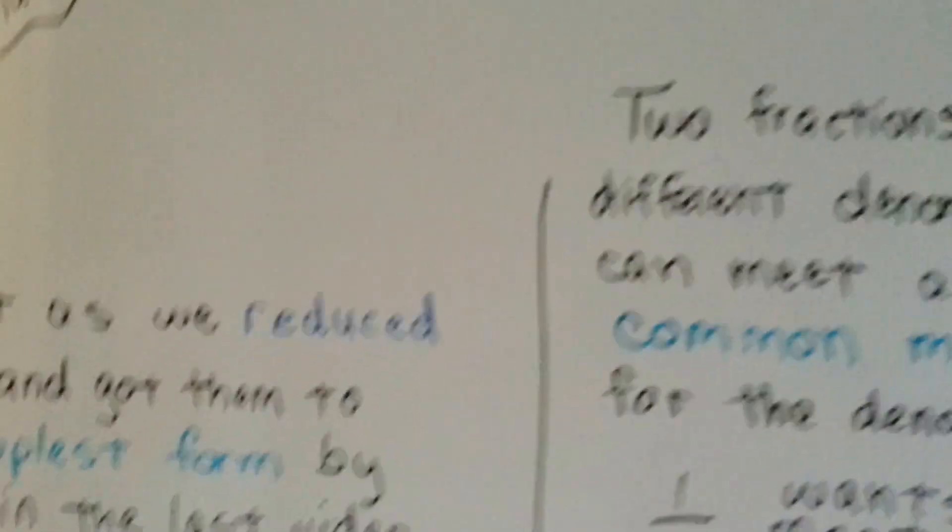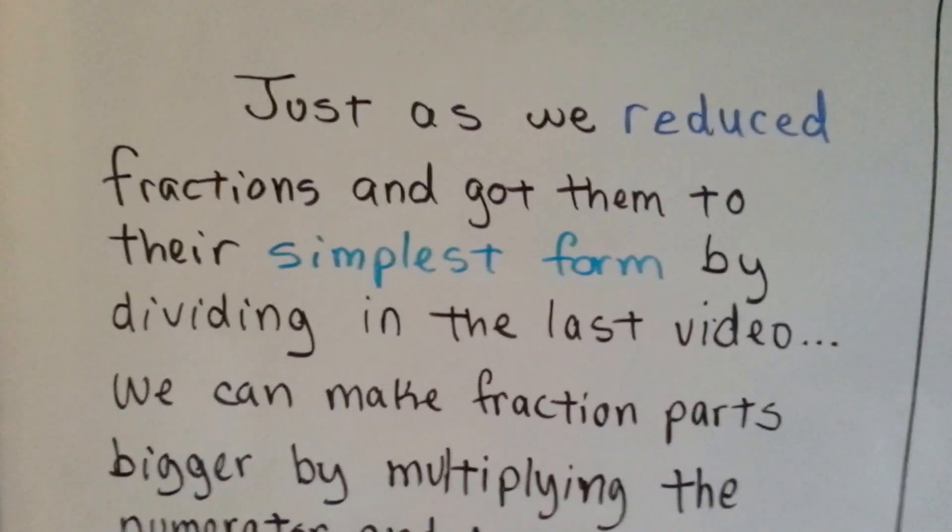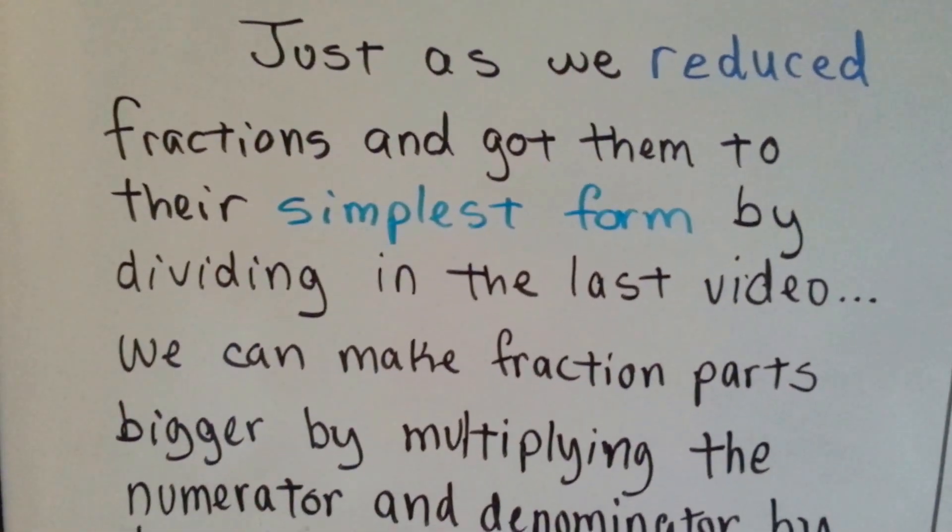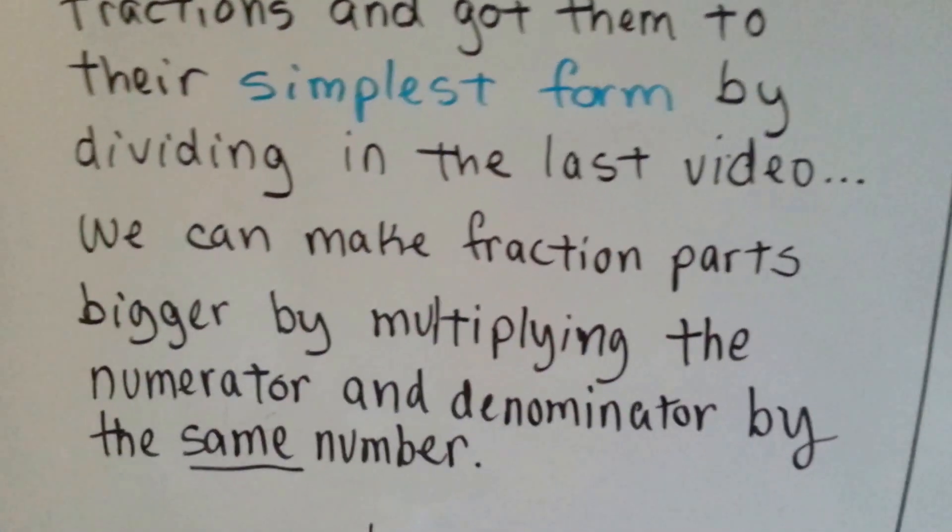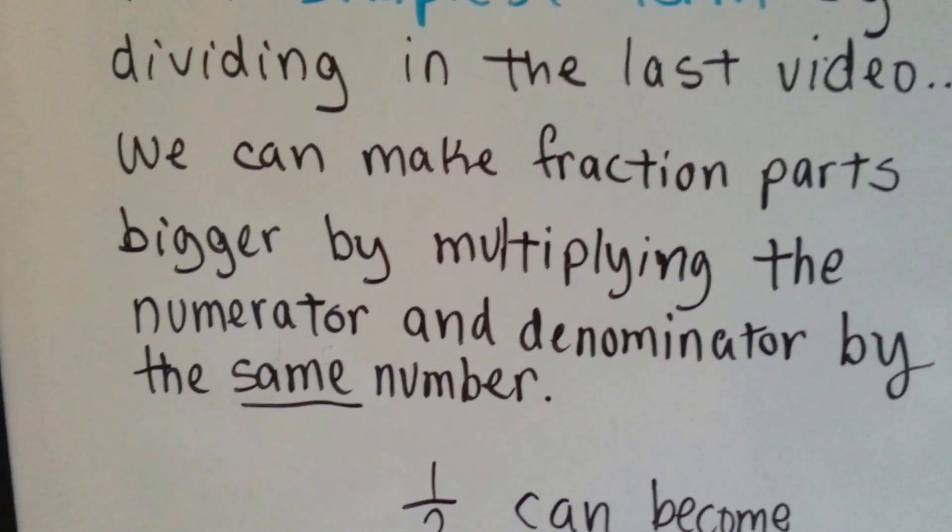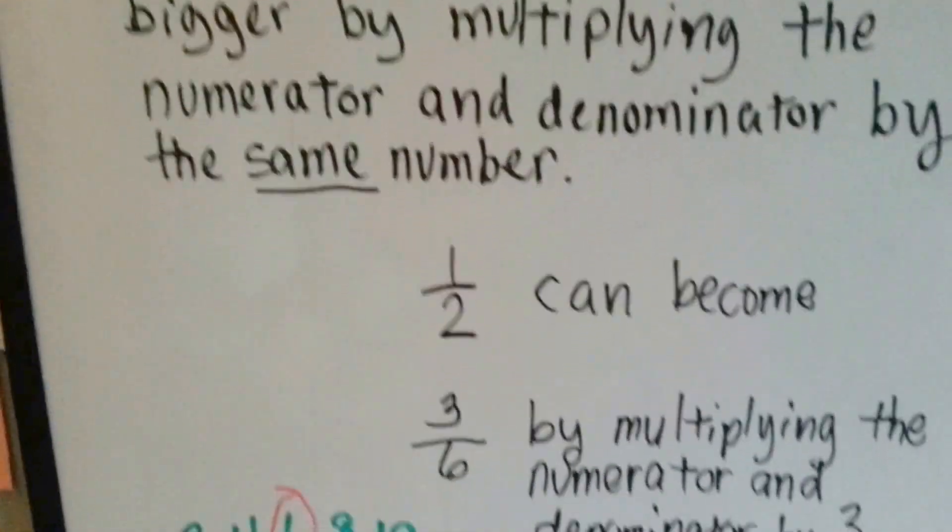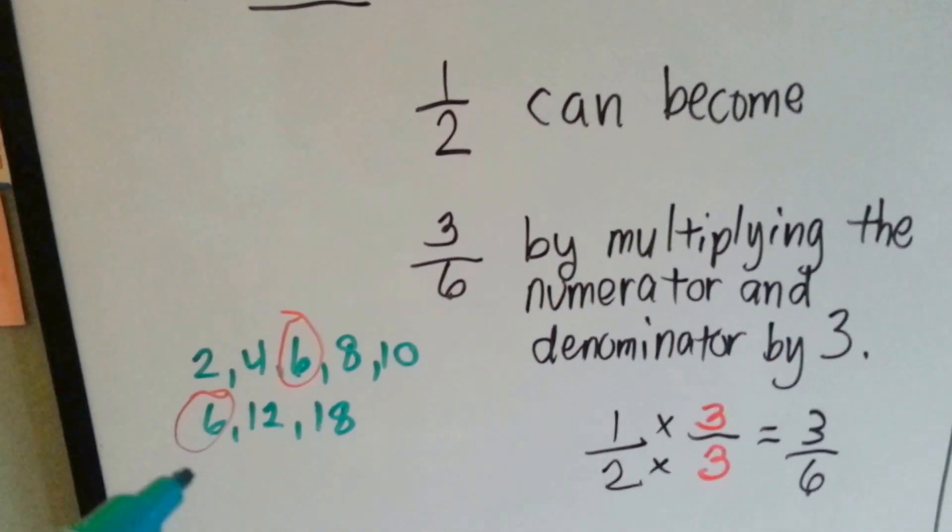Just as we reduced fractions and got them to their simplest form by dividing in the last video, we can make fraction parts bigger by multiplying the numerator and denominator by the same number. All we have to do is find the multiples.